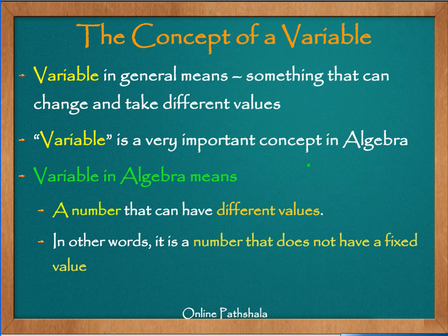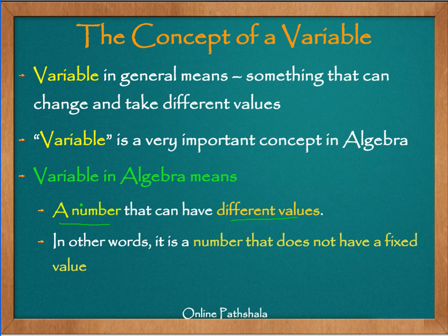Now variable is a very important concept in algebra. In fact, the origins of algebra are based on the concept of variable. In the context of algebra, a variable means a number that can have different values. So the two things that are important: what is a variable? It's a number, and it is a number that can have different values. In other words, it is a number which does not have a fixed value.